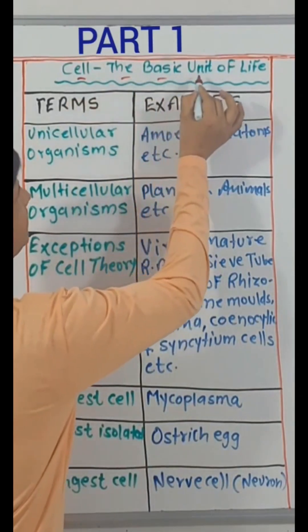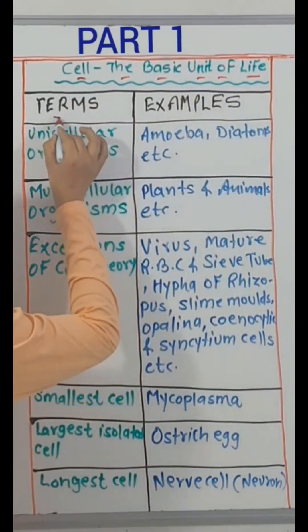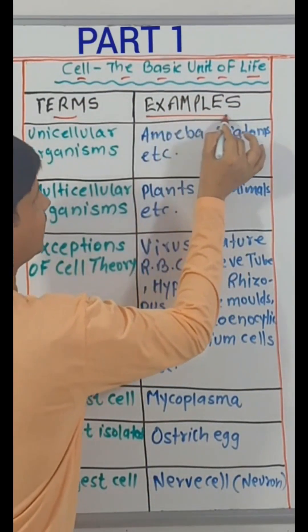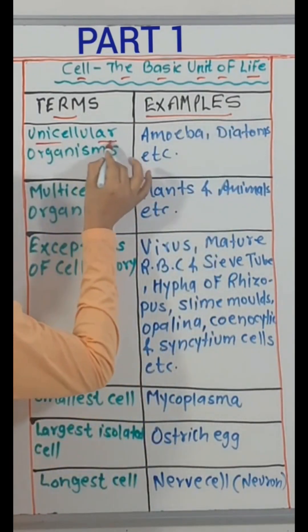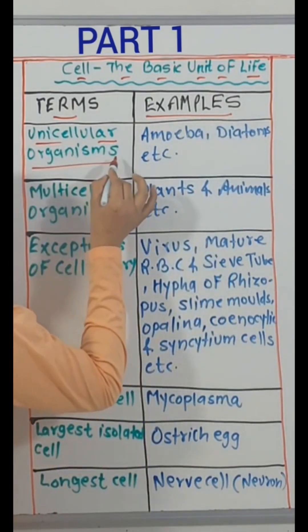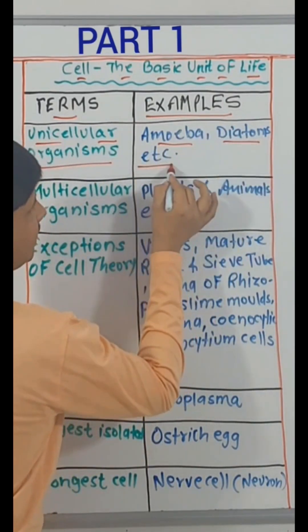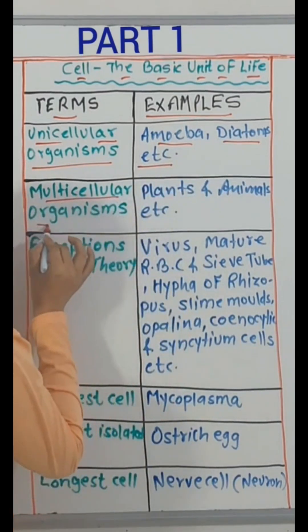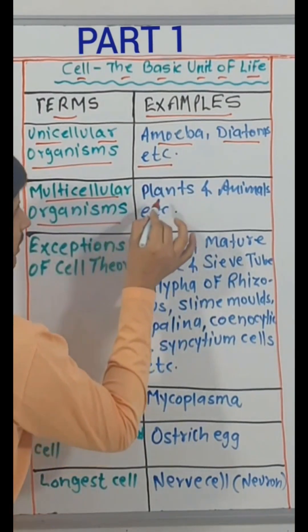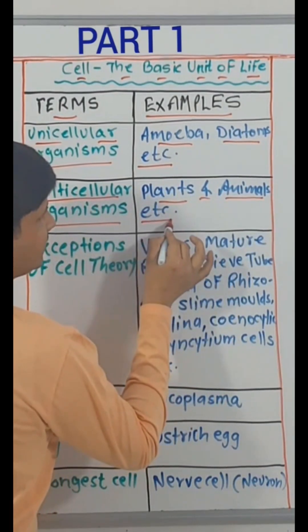Cell, the basic unit of life. Terms and examples: unicellular organisms — amoeba, diatoms, etc. Multicellular organisms — plants and animals, etc.